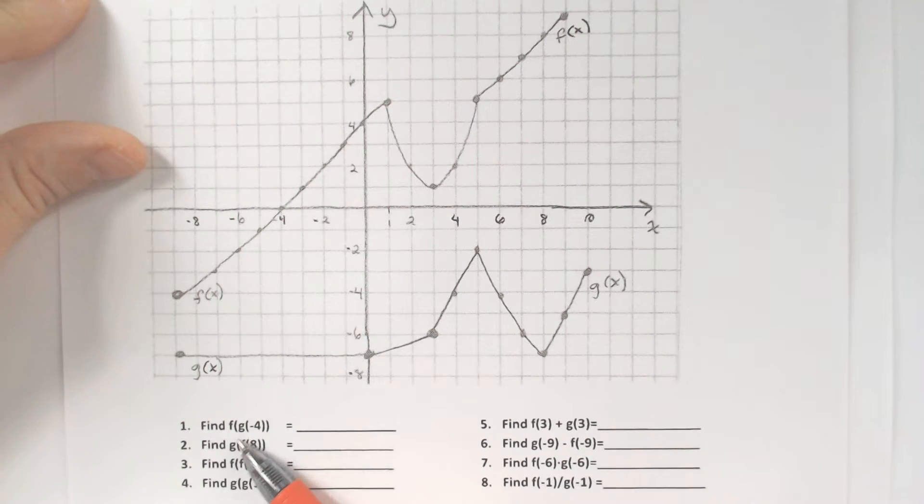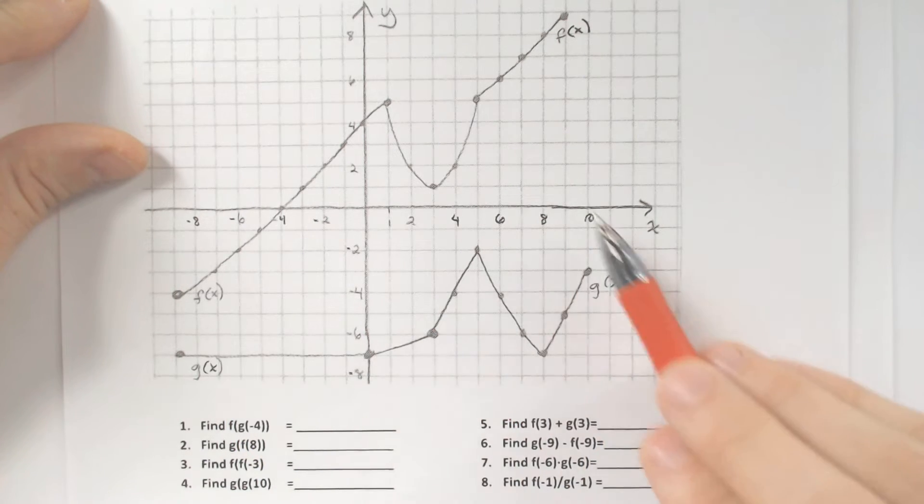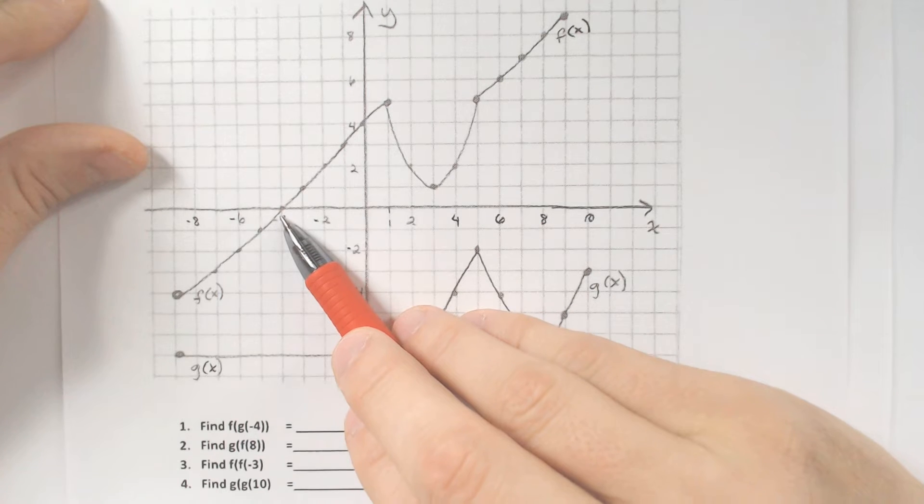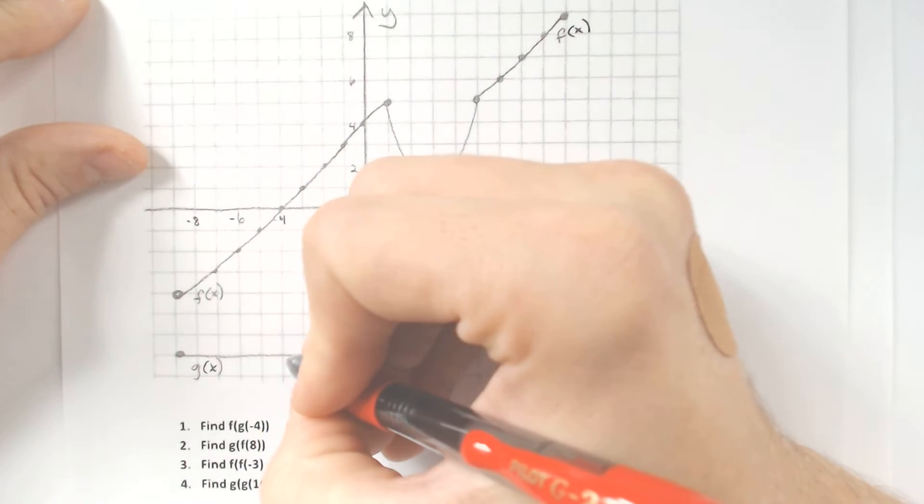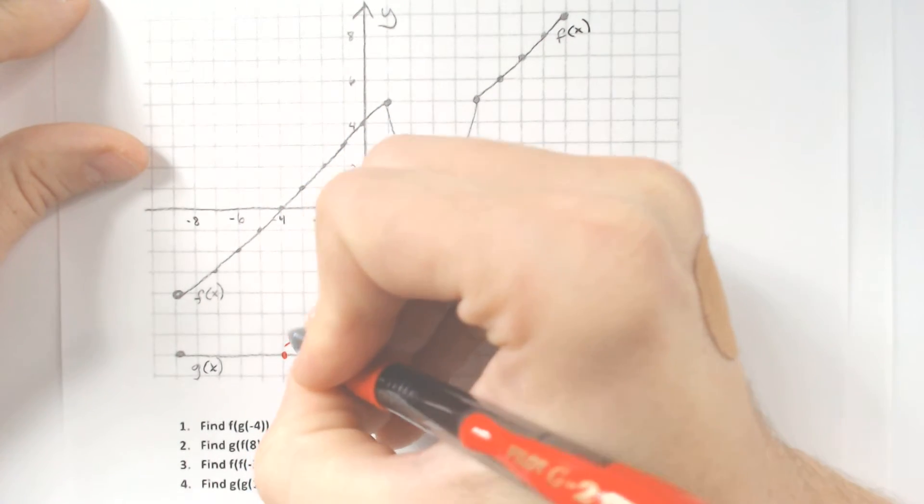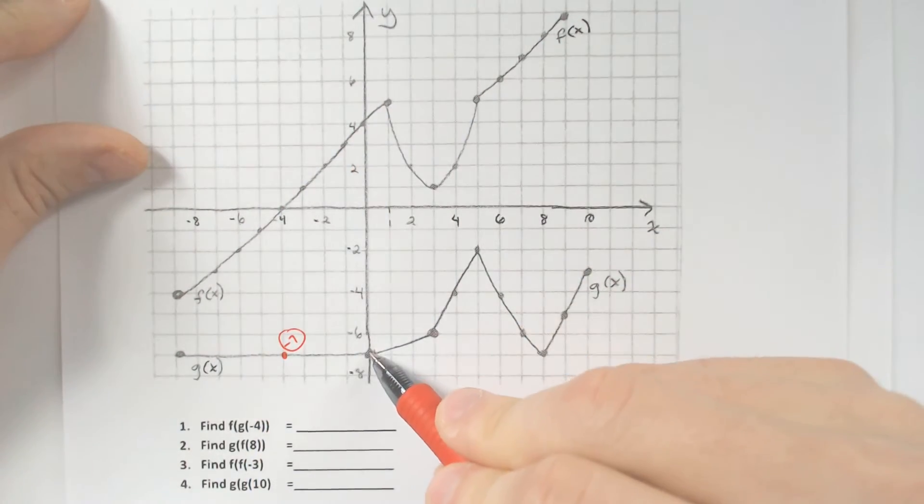Looking at number one, we have g of negative 4. We're going to start with g of negative 4. You go to the g of x function, find negative 4, trace down, and negative 4 produces negative 7 because we're at negative 7 right now.